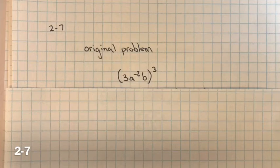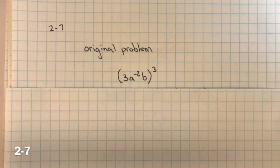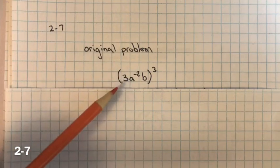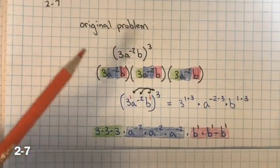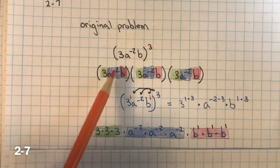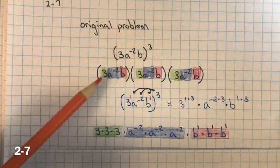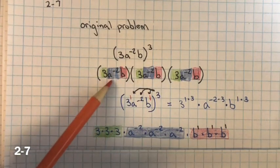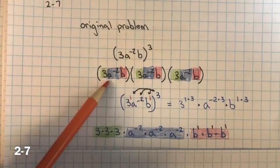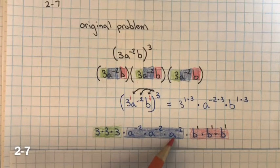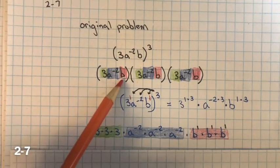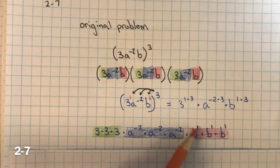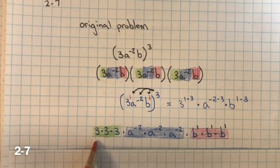Problem 2-7. Benjamin is taking Algebra 1 and is stuck on the problem shown below. Examine his work so far and help him by showing and explaining the remaining steps. Here's the original problem — he needs to simplify it. There are two ways to simplify it. Benjamin expanded it: you can multiply the three 3s — 3 times 3 times 3 — and the a's have the same base, a to the negative second power. You could use a placeholder for the exponent of 1 on the B term.